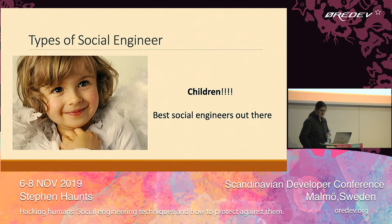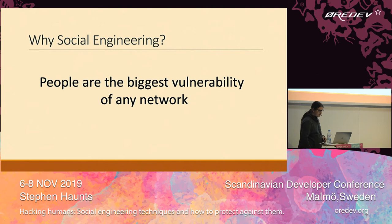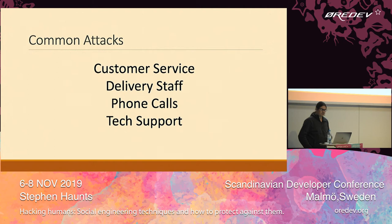Why do people go to all this hassle? Because it consistently works. If you're targeting a huge number of people and you come across as convincing, it's very easy to get someone to do something they're not supposed to do — it's human nature. People are the biggest vulnerability to any network. The more people your company employs, the bigger the threat, because people make mistakes and can give up information without thinking. It also offers a path of least resistance — getting someone to give you their password might be easier than a full network penetration test. Common attack vectors include customer service staff, delivery staff turning up in a convincing uniform, receptionists, phone calls, and tech support.